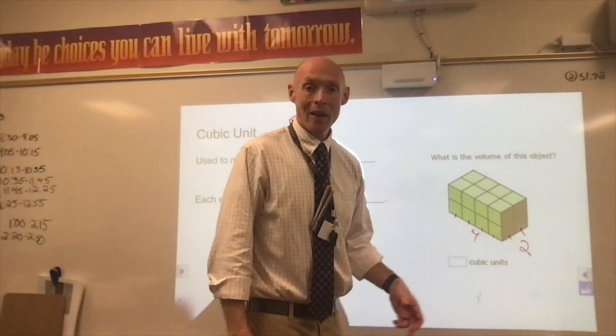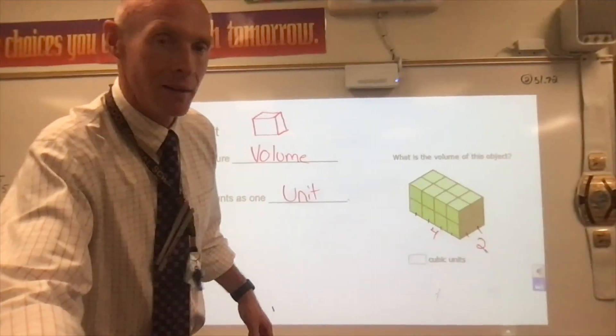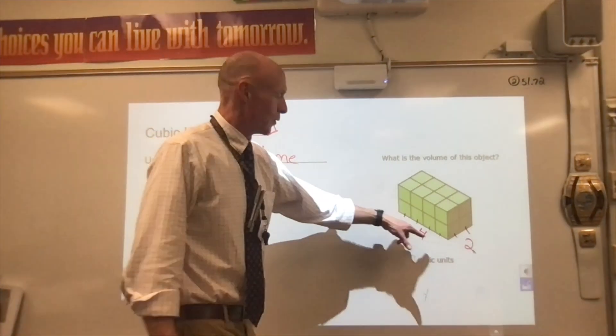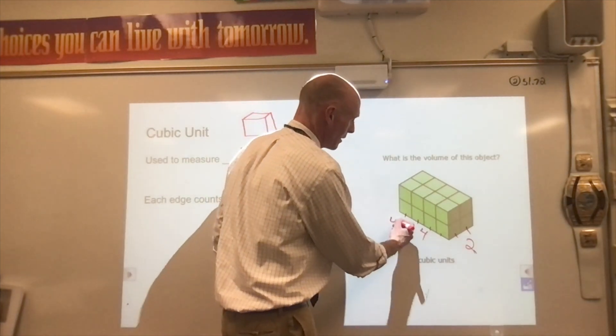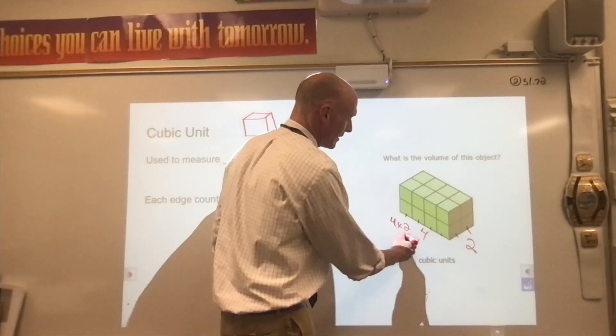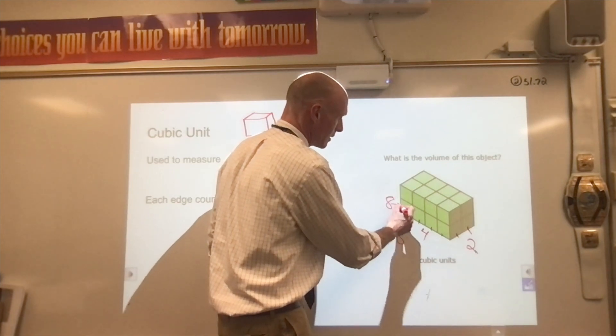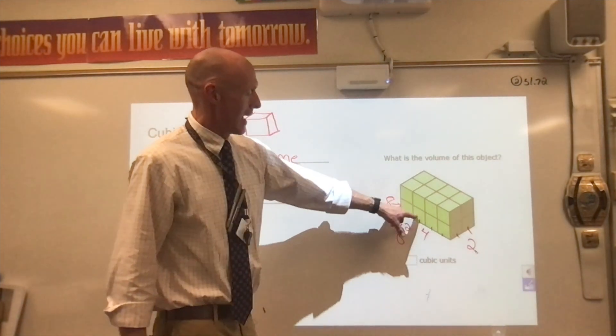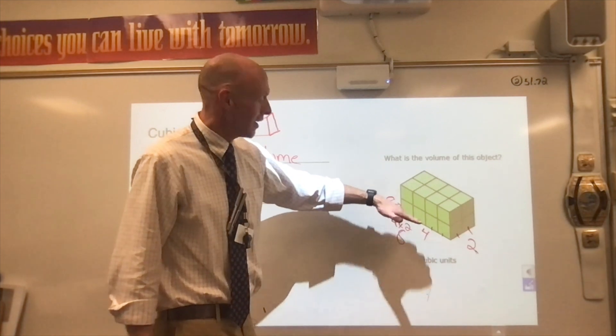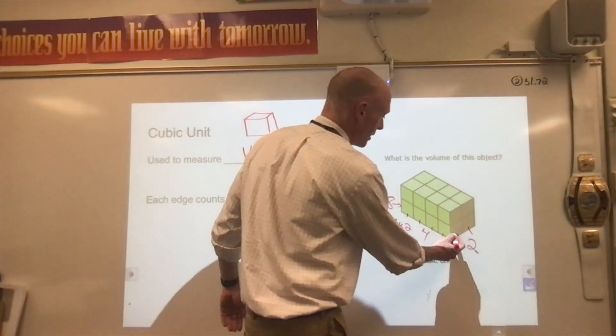So we know how many are on this bottom layer. We know that there's four and two. So there's going to be four times two. There's going to be eight on this bottom layer. And how many layers are there? What's the height? One, two. Two layers.